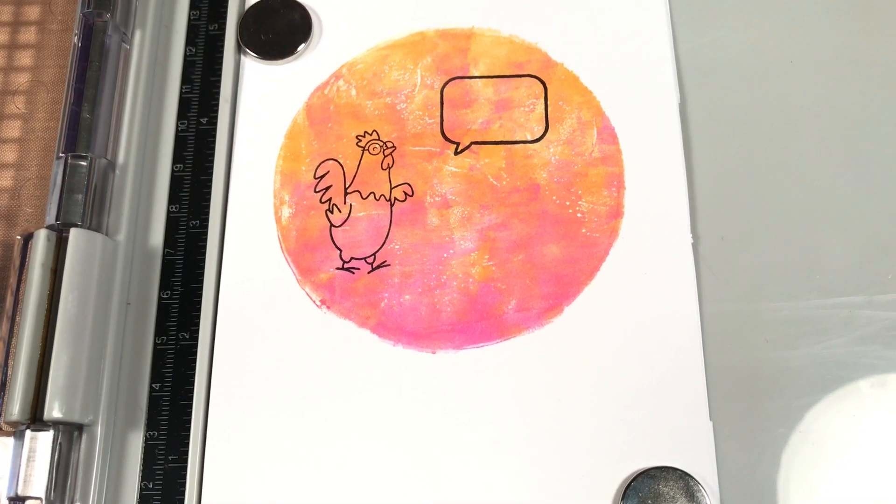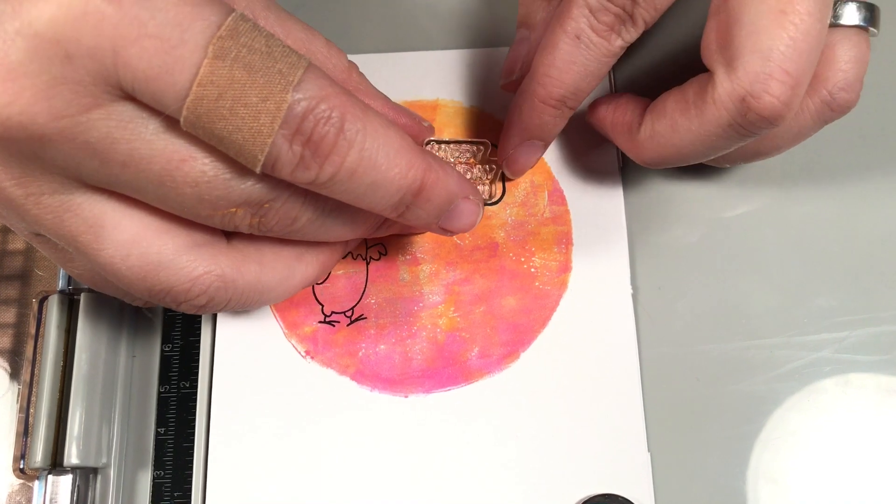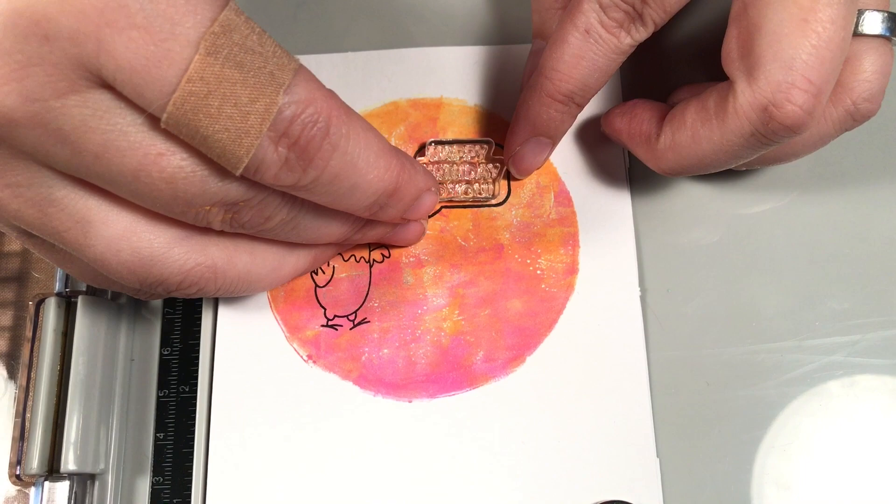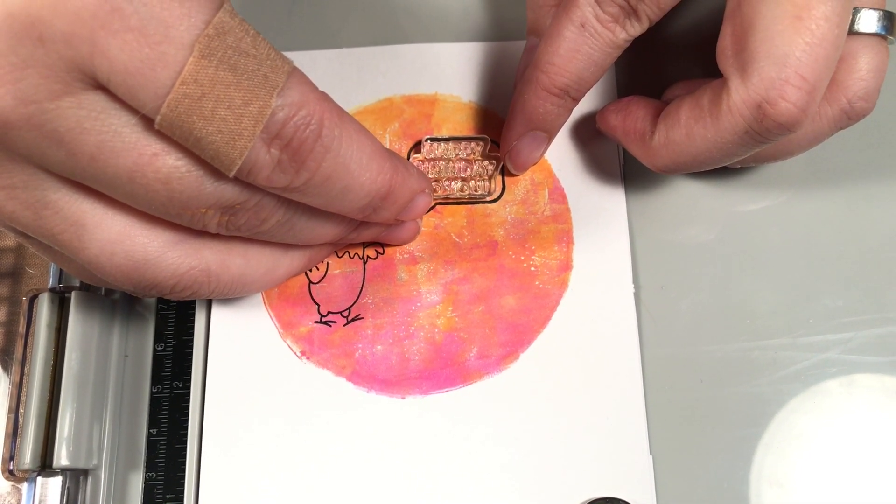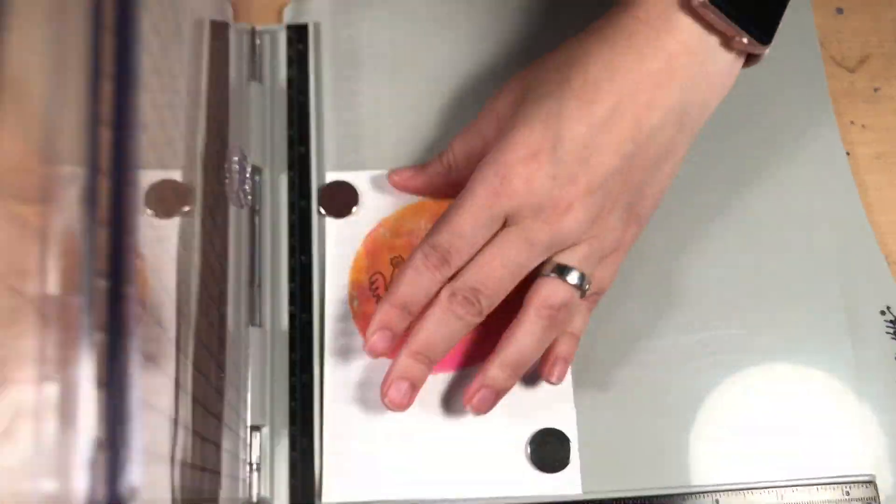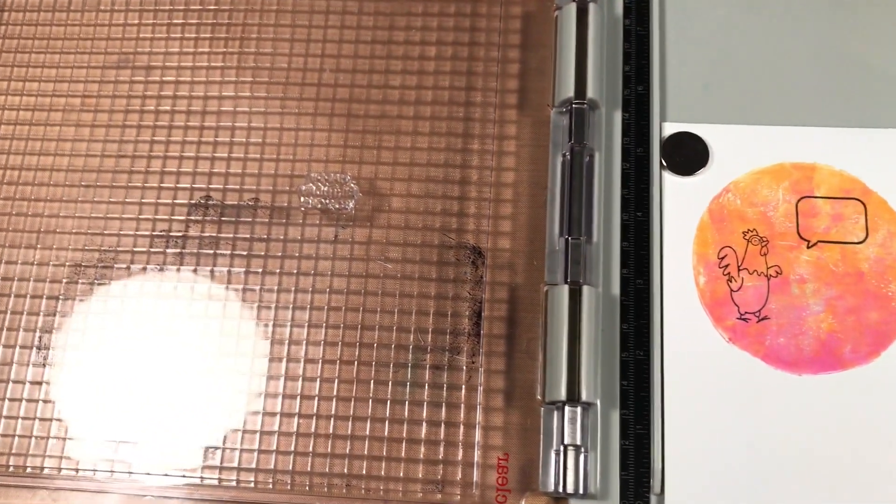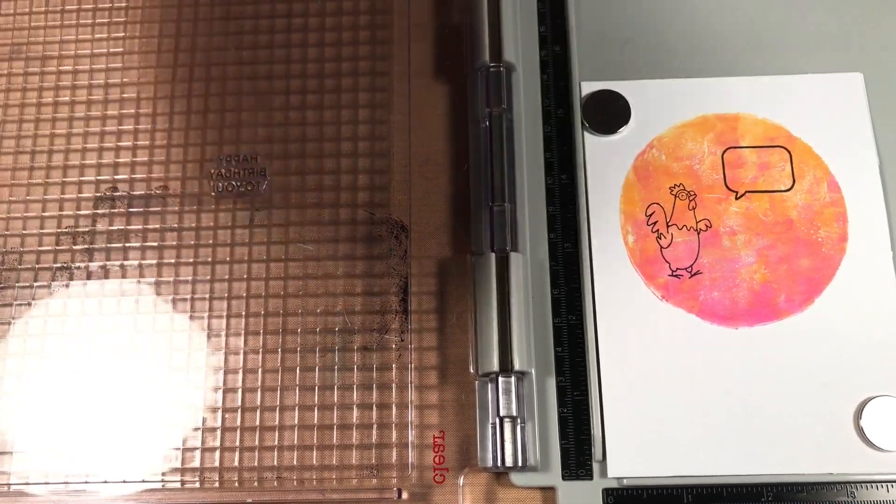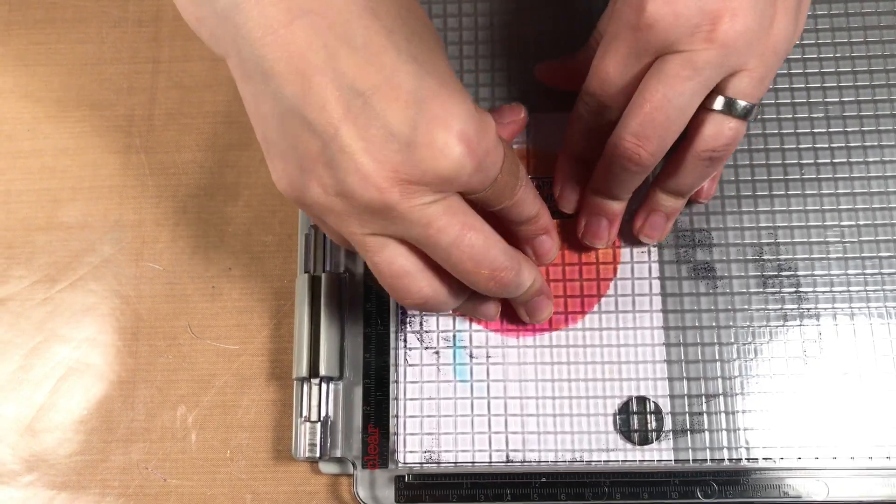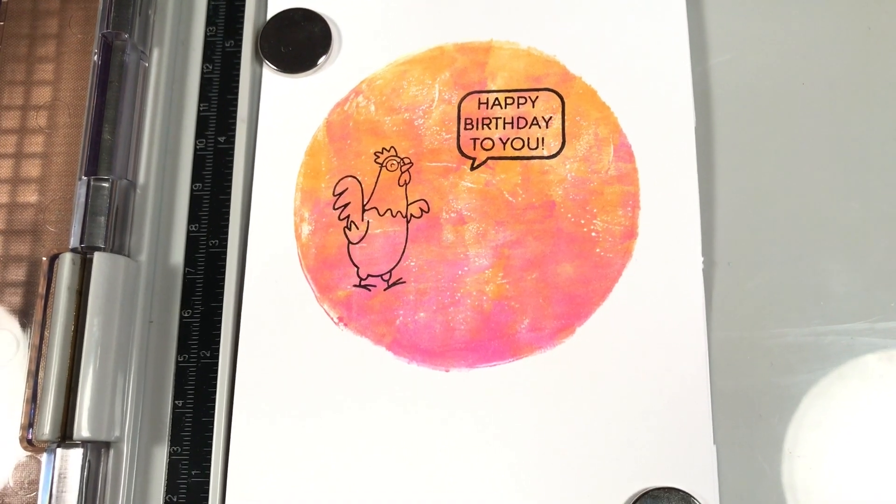I'm going to move those out of the way. Then I'm going to get my little word happy birthday to you, position it in there. This is a new stamp I haven't used yet so it's a little stickier. And there I have a perfectly stamped card.